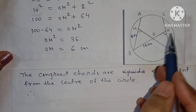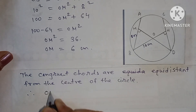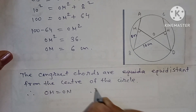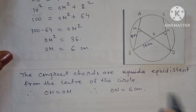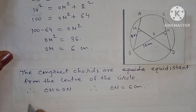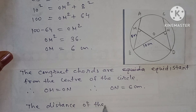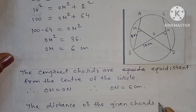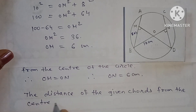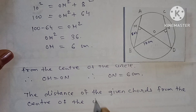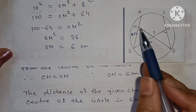Therefore OM = ON = 6 centimeters. The distance of the given chords from the center of the circle is 6 centimeters.